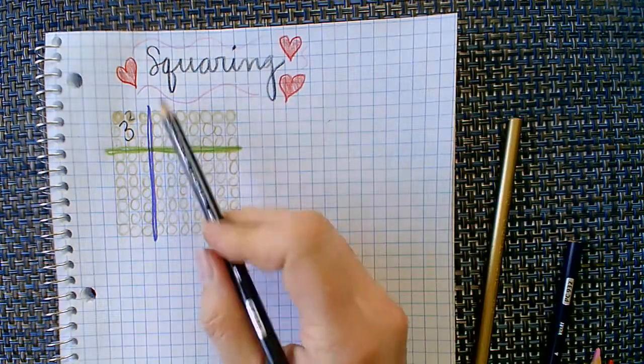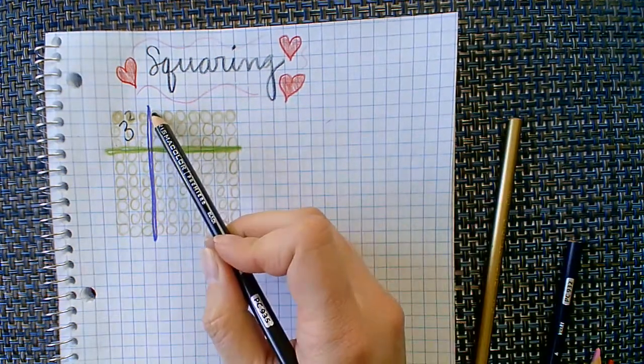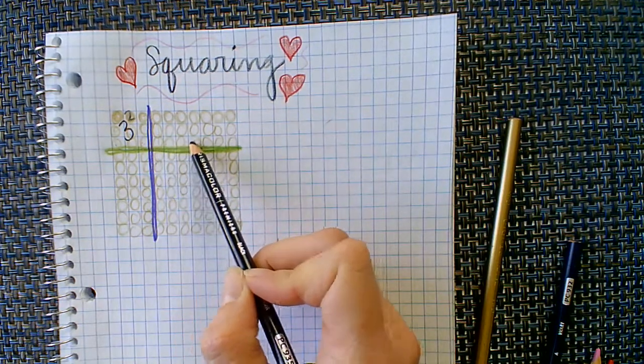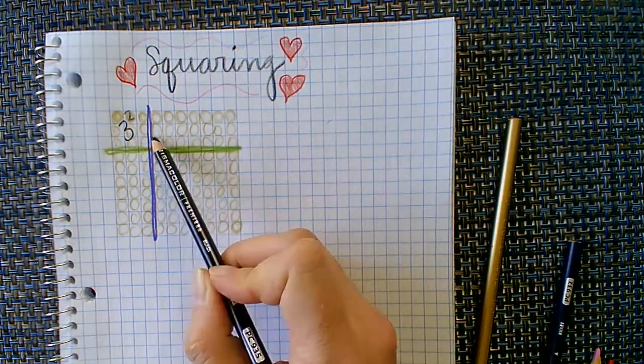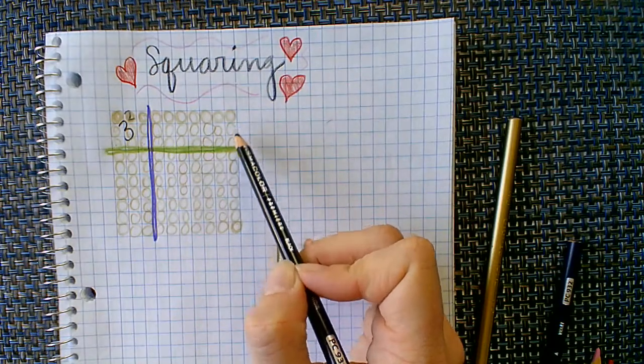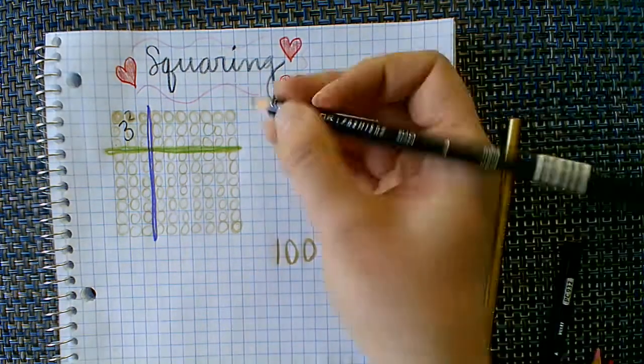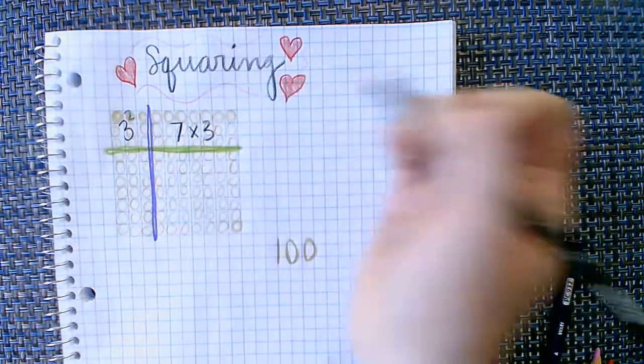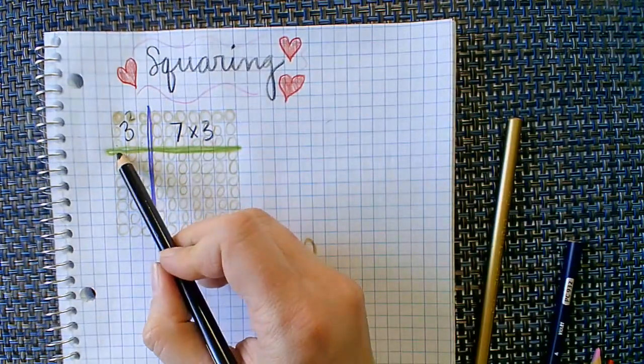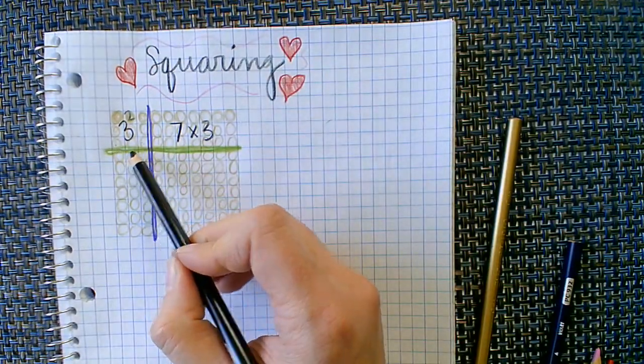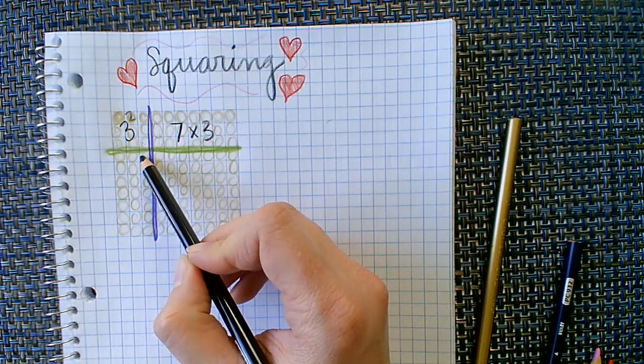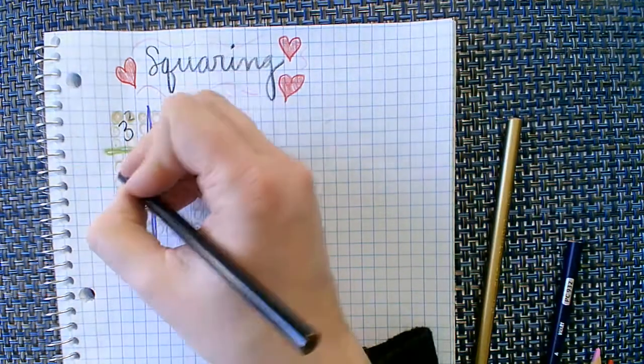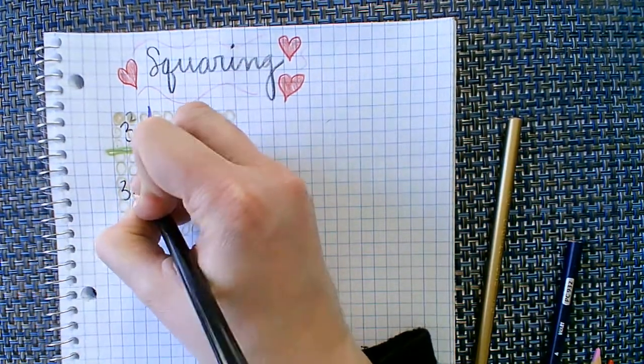And then what do I have here, this rectangle? It's three, how many do I have here? One, two, three, four, five, six, seven. Seven taken how many times? One, two, three. So three times seven.